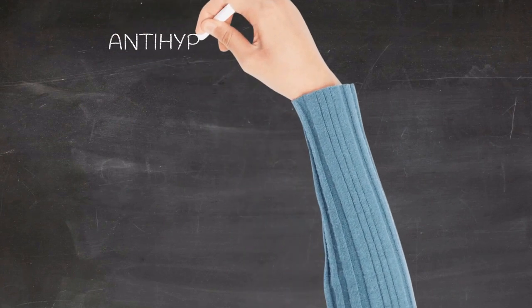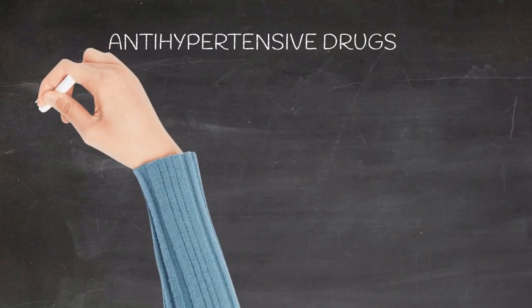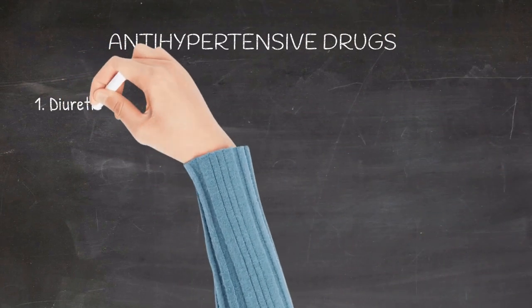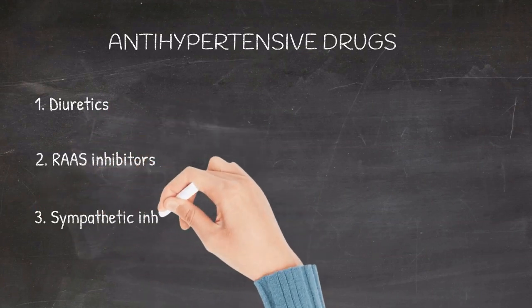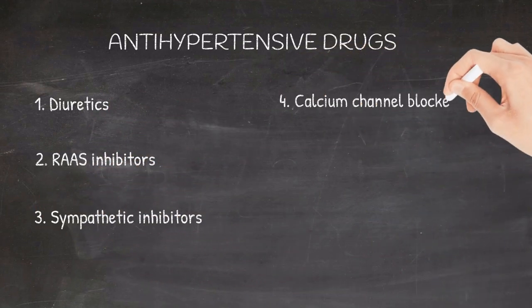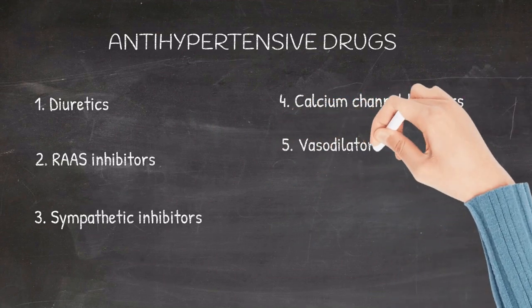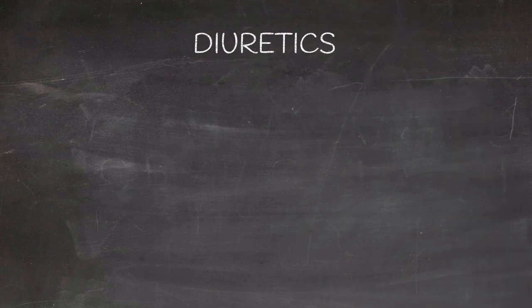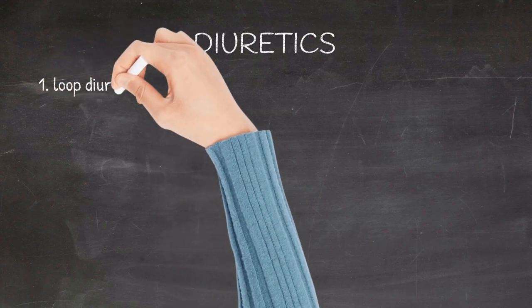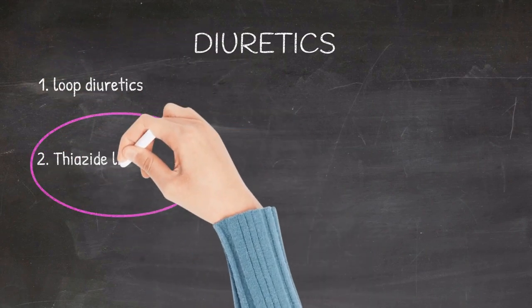Drug therapy of hypertension: antihypertensive drugs include diuretics, RAS inhibitors, sympathetic inhibitors, calcium channel blockers, and vasodilators. Let's first have a look into diuretics. Different classes of diuretics used in the management of hypertension include loop diuretics, thiazide-like diuretics, and aldosterone antagonists.